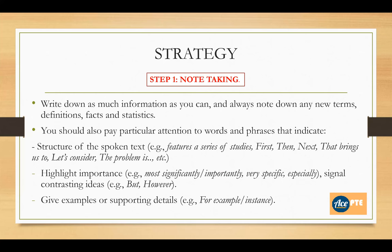There are highlight words which indicate importance, like 'most significantly' and 'importantly.' Then there are words indicating contrasting details, like 'however.' Whenever information comes after these words, it is the most important information that could play a huge role in your content. There are also words or phrases used by speakers to give examples or supporting details, like 'for example' and 'for instance.'